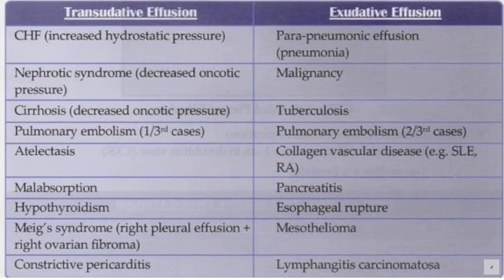Exudative effusion is caused by parapneumonic effusion in pneumonia, malignancy, tuberculosis, pulmonary embolism in two-thirds of cases, collagen vascular diseases, pancreatitis, esophageal rupture, mesothelioma, and lymphangitis carcinomatosis.